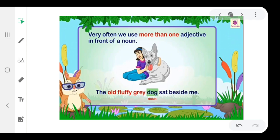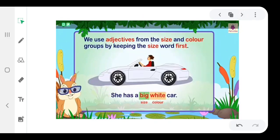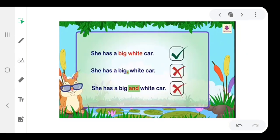We use adjectives from the size and color groups by keeping the size word first. For example, she has a big white car. Big is size, white is color. She has a big white car is correct. She has a white big car is wrong. She has a big and white car is wrong.